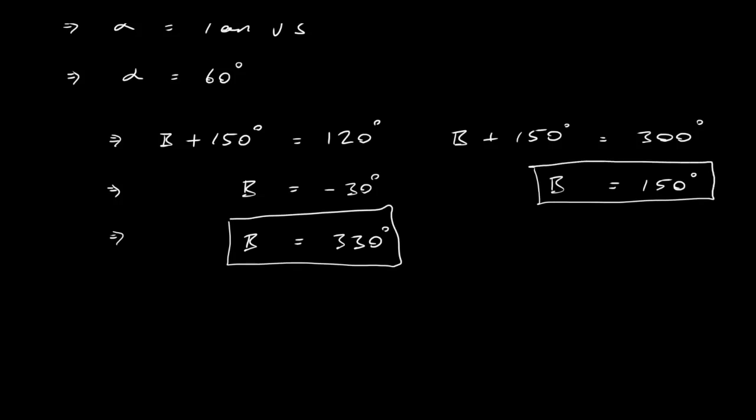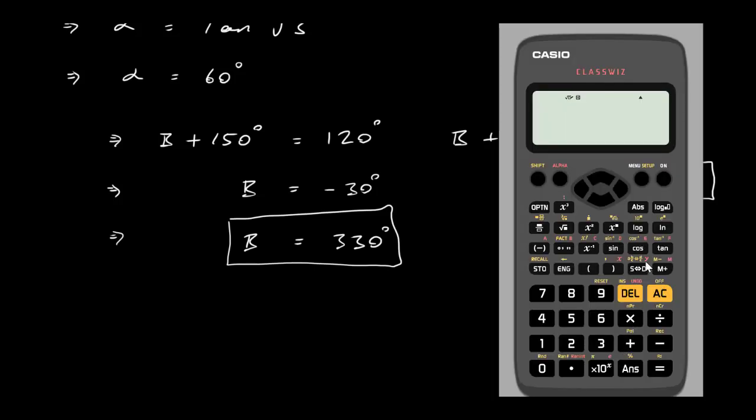Now you can check both of those by just keying them into your calculator. So what we need to do here is just type in tan, or B is 330, so let's type in 330 degrees, and then we add 150. And we should get minus root 3, which is what we do get. The other angle was 150, so we're going to type in 150 plus 150. And again, we should get minus root 3, which is what we get. So that's it. That's it for this particular question.